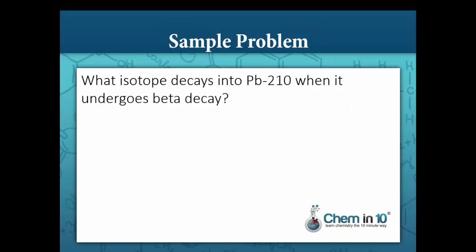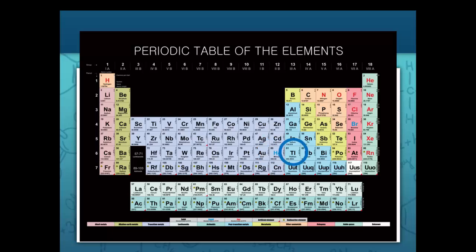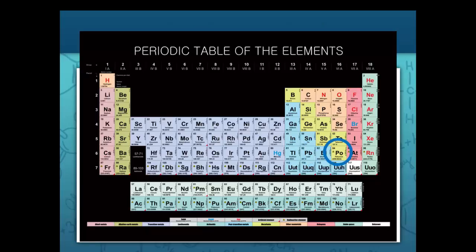Sample problem: What isotope decays into lead-210 when it undergoes beta decay? We know that the mass number of our unknown isotope is 210. The sum of atomic numbers on the right-hand side must equal the left-hand side, so 82 plus negative 1 equals 81 — our unknown isotope is thallium. Additionally, the beta decay of bismuth-210 results in an isotope with a mass number of 210 and an atomic number of 84. The identity of this isotope is polonium.